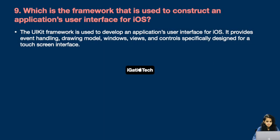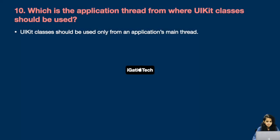Next question: which framework is used to construct an application's user interface for iOS? The UIKit framework is used to develop an application's user interface for iOS. It provides event handling, drawing model, windows, views, and controls specifically designed for a touch screen interface. Next question: which application thread should UIKit classes be used from? UIKit classes should be used only from an application's main thread.